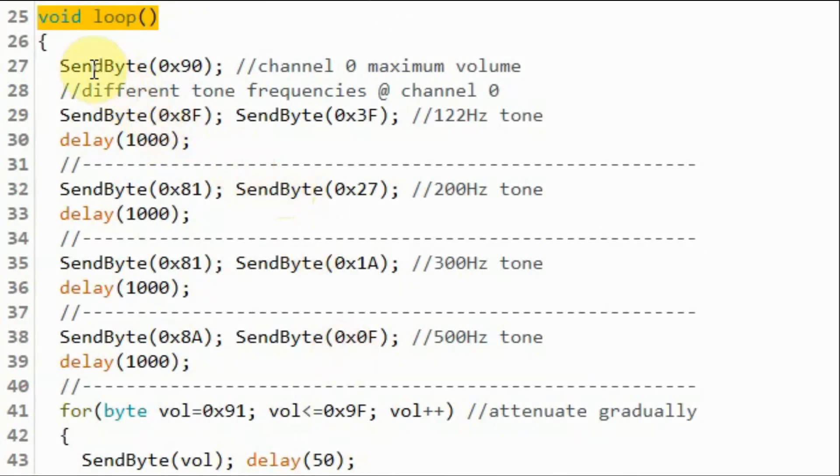Inside the loop function we first set the volume of channel 0 to maximum by sending this byte. And then we send these two bytes to set the tone at channel 0 to 122 Hz for one second. And then we set the tone to 200 Hz and then 300 Hz and then 500 Hz.